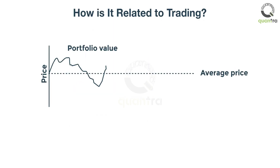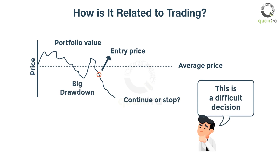How does this apply to trading? You might enter a trade that is expected to revert back to its average price, but you find that the price overshoots in the adverse direction, leading to a significant unrealized loss. Should you close the trade at a loss, or wait until it reverts?